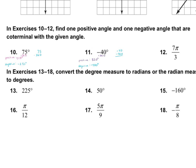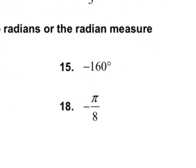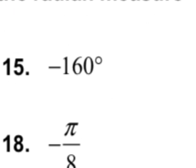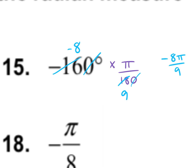For problems 13 through 18, we're converting between degrees and radians. For number 15, multiply by π over 180 to convert to radians. Cancel the zeros, then divide both 16 and 18 by 2, leaving negative 8 and 9. So the answer is negative 8π over 9, and we can't simplify further.